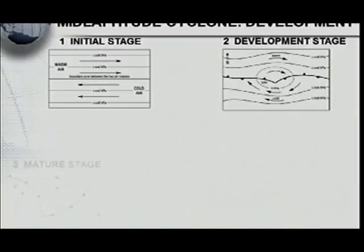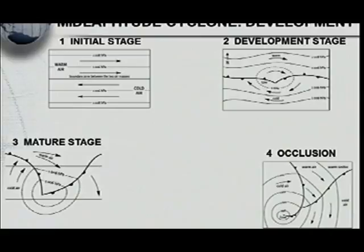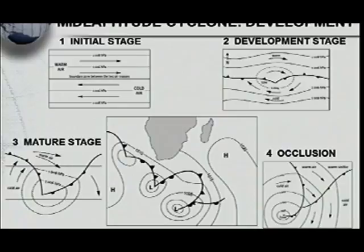This is the development of the mid-latitude cyclone. You must know that when we have the mid-latitude cyclone, we have four stages of development: the initial stage, the development stage, the mature stage, as well as the occlusion stage. These are the four stages, and you must be in a position to describe each of these stages.